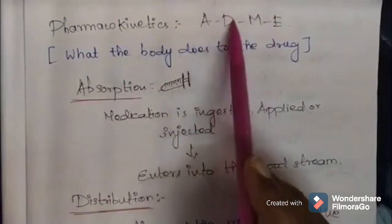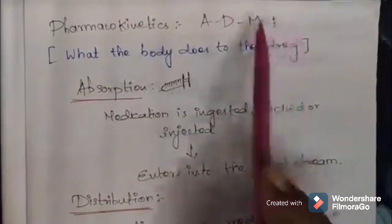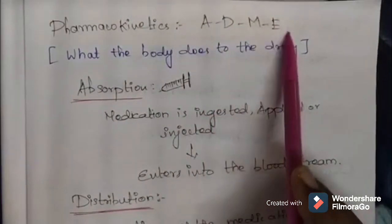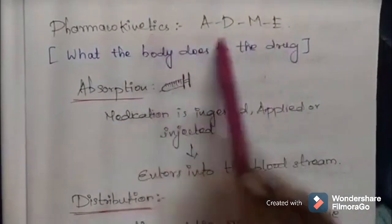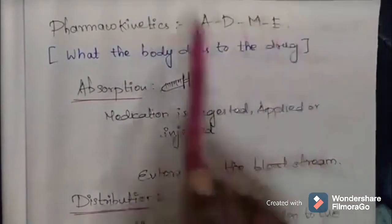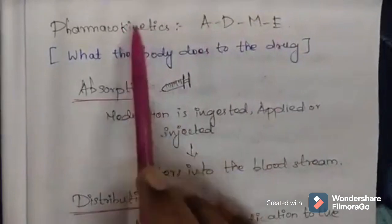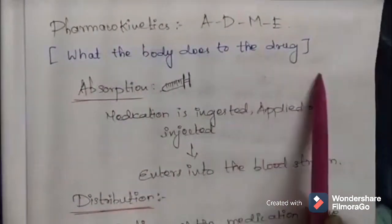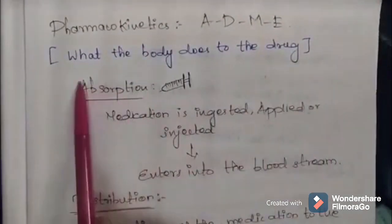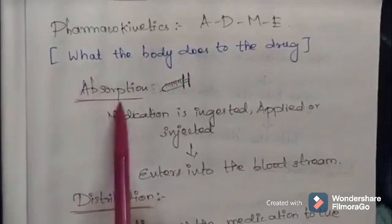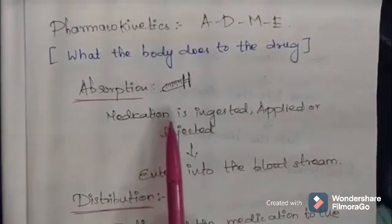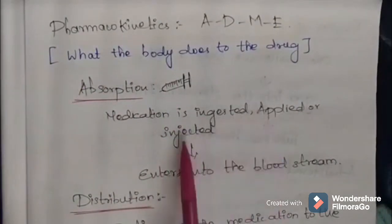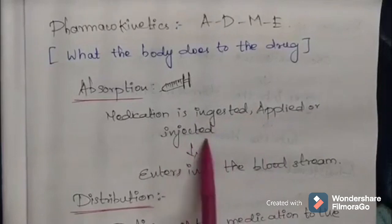Drug action can be explained by knowing the pharmacokinetics and pharmacodynamics of the drug. ADME — absorption, distribution, metabolism, and excretion — are the four phases of pharmacokinetics. Pharmacokinetics is what the body does to the drug. The first phase is absorption, in which medication is ingested, applied, or injected and then enters the bloodstream.